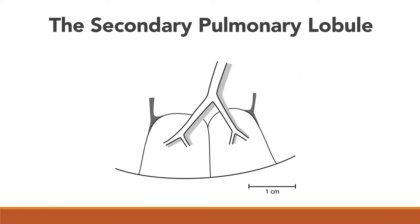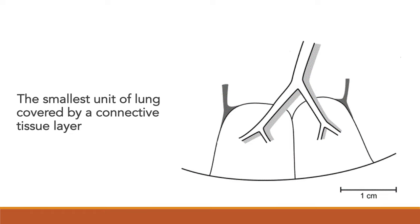So what is a secondary pulmonary lobule? The definition is the smallest unit of lung that is covered by a connective tissue layer. There is something called a primary pulmonary lobule, which is not very important for radiologists. You might hear me refer to the secondary pulmonary lobule as just a pulmonary lobule or lobule — all of those terms are really interchangeable.